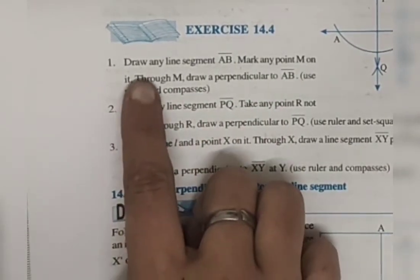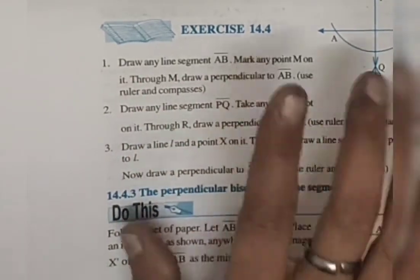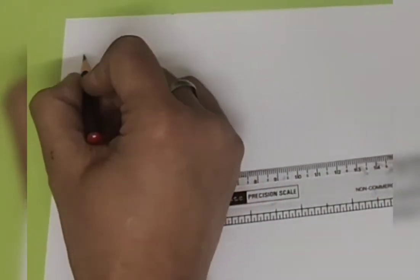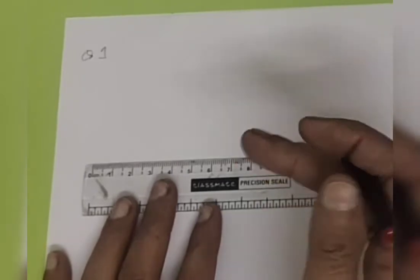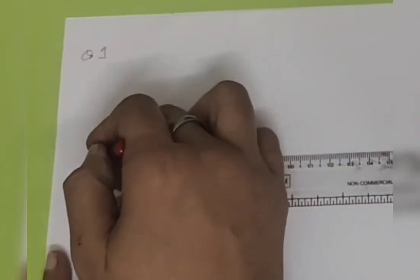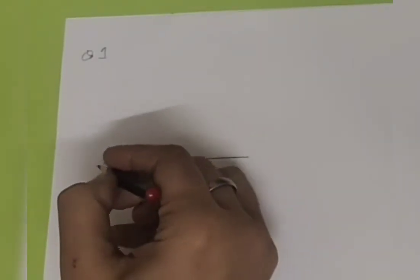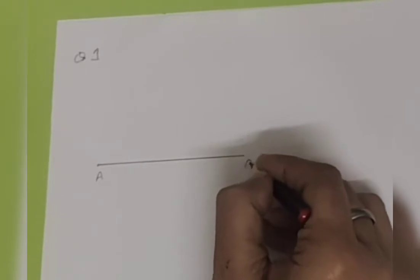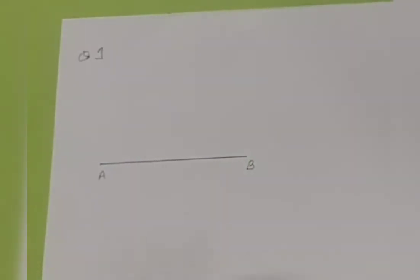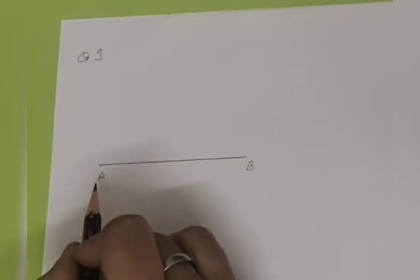Let's start. The first thing in question one is to draw any line segment AB. So without thinking about the next step, I'm first going to draw it. No length is given so I'm just drawing it. Always remember: if a line segment is asked, you need to draw only a line segment. So this is line segment AB.